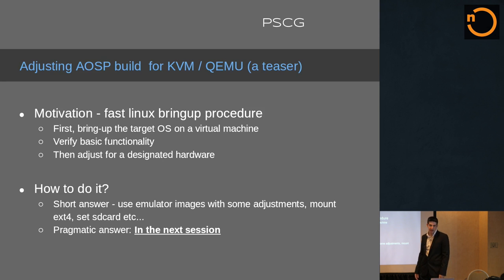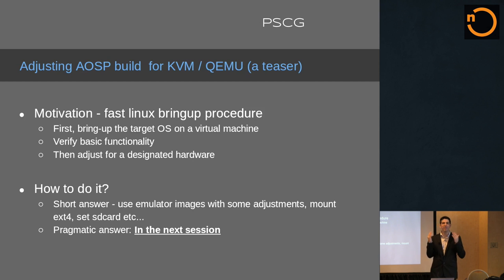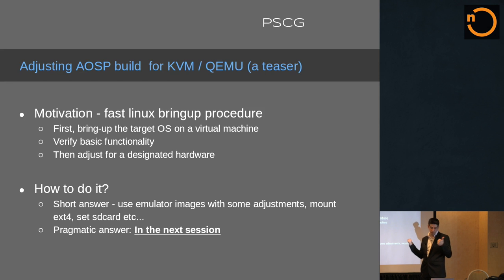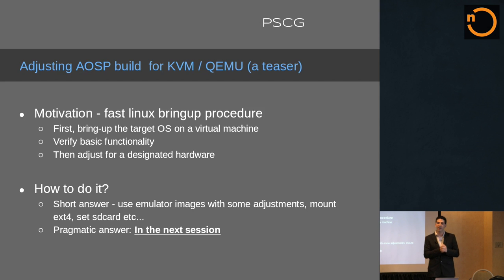In the next session we'll adjust AOSP for KVM. The motivation: when building custom hardware, first bring up the OS on a virtual machine to verify basic functionality while the hardware team works in parallel. Then integrate. To do this, use the emulator images as shown, mount ext4 partitions, and handle SD cards — which is very important in KitKat, since without an SD card the camera and browser won't work.